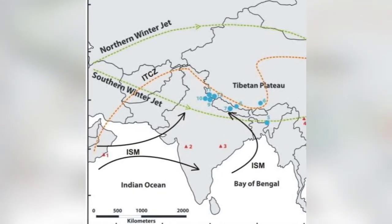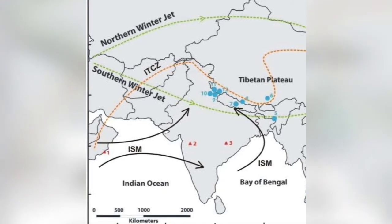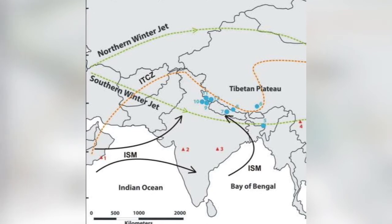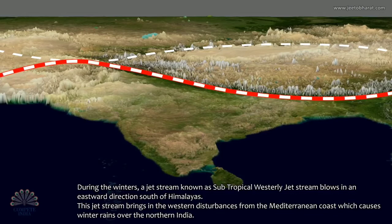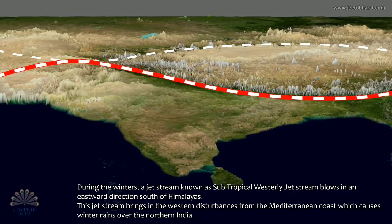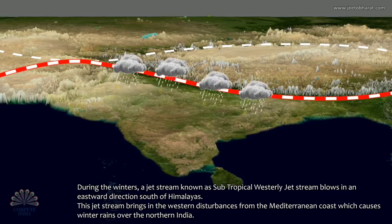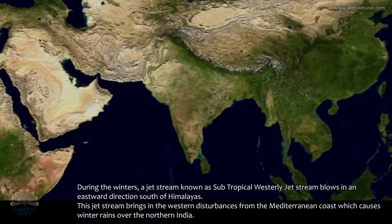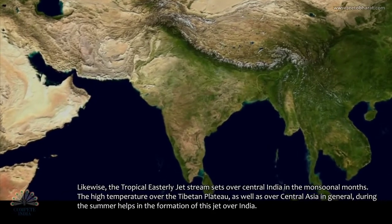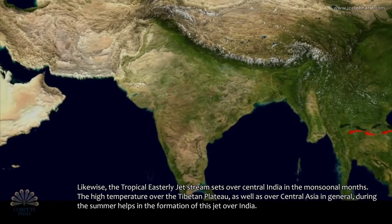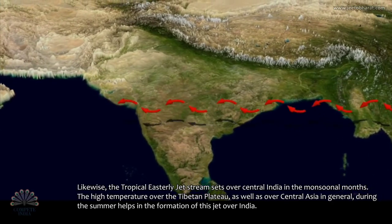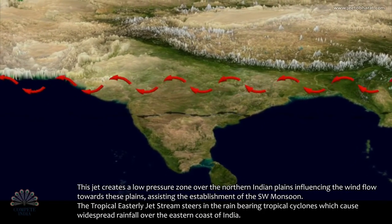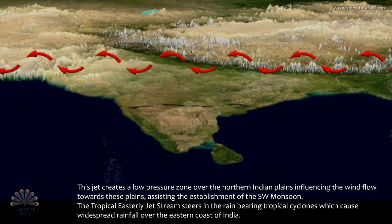Moving to jet streams: a jet stream is a fast-moving air mass at a height of about 10–12 km above the mid-latitudes. Because of the Himalayas, they are divided into easterly jets and westerly jets. During winter, a westerly jet stream flows south of the Himalayas, bringing winter rainfall from western disturbances in the Mediterranean Sea and causing rainfall over states like Punjab, Haryana, and Jammu and Kashmir. In the same manner, an easterly jet stream flows over central India in July and August — the monsoonal months. The high temperature over the Tibetan Plateau during summer helps in the formation of this jet stream, which creates lower pressure over India and attracts moisture-laden winds from the southwest, also leading to the formation of tropical cyclones on the east coast of India.